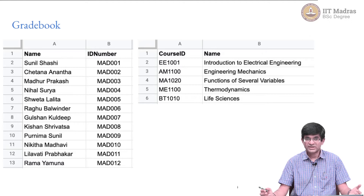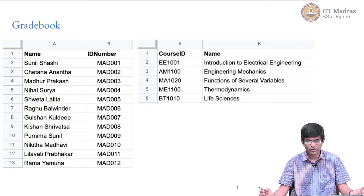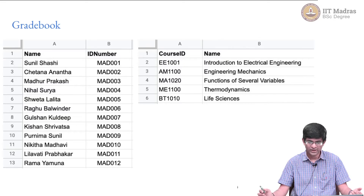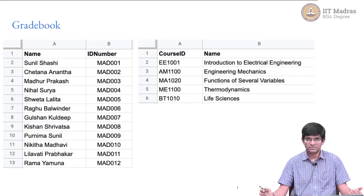This is one way by which we could represent the data. On the left-hand side you can see a list of names — just made-up names generated by a random name generator. The ID numbers use the prefix MAD, for Modern Application Development, followed by 001, 002, 003, and so on. Typically, this would be some kind of roll number associated with your college or institution — in the case of the online degree, the IIT Madras is the one giving you your roll numbers.